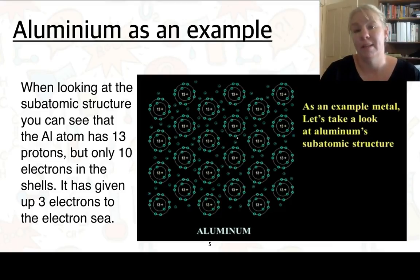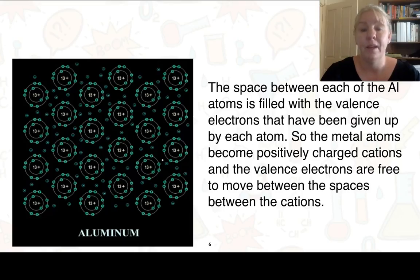Let's have a look at aluminium as an example. When we look at the subatomic structure you can see that aluminium has 13 protons, but only 10 electrons are in the valence shells. It's actually given up 3 electrons to the electron sea. The space between each of the aluminium atoms is then filled by these valence electrons and they are the ones that have been given up by each atom.